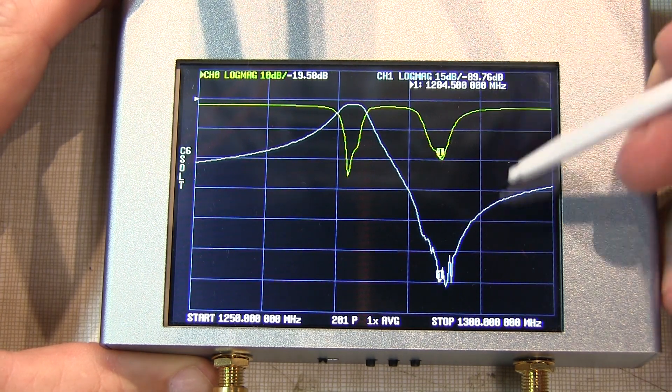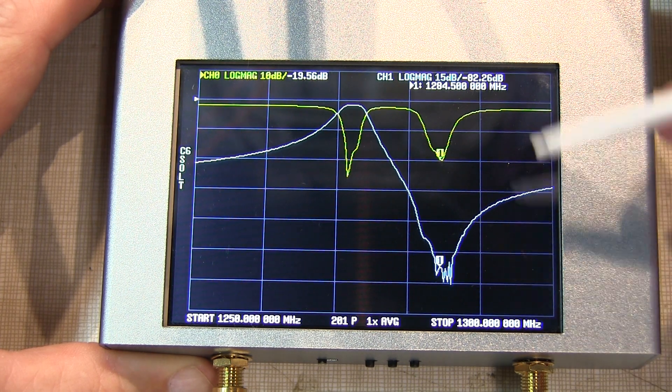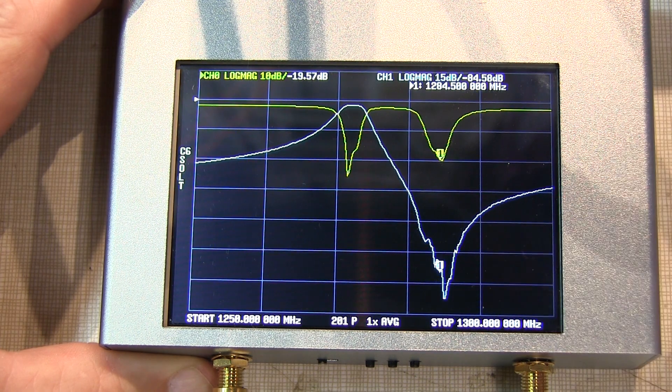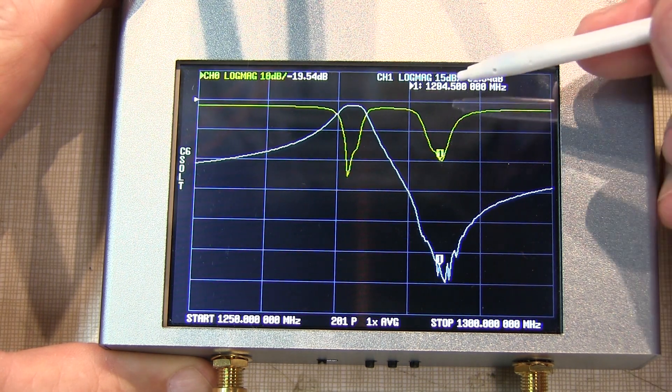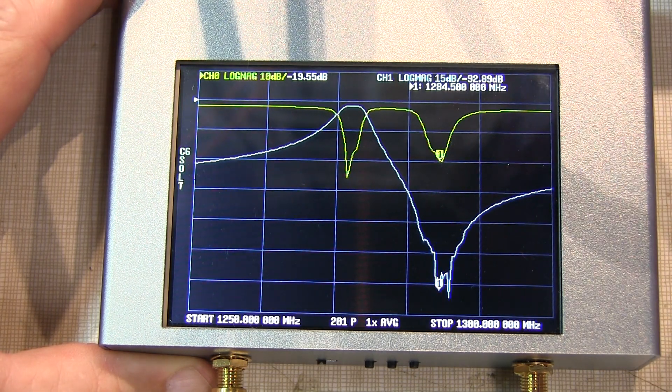We can see that notch is probably at the limit of what we can see with this nano VNA, 80 to 90 dB down. If we put some averaging on, we may be able to get that to settle a little more, but I think this is good enough. So we know this duplexer is tuned to 1284.5 and 1272.5 megahertz.